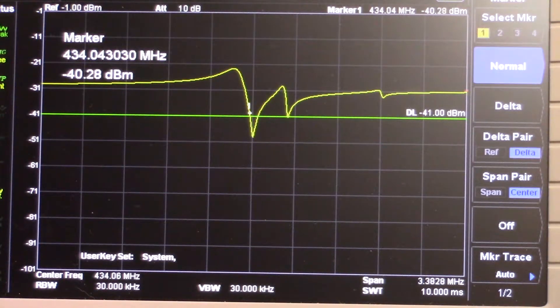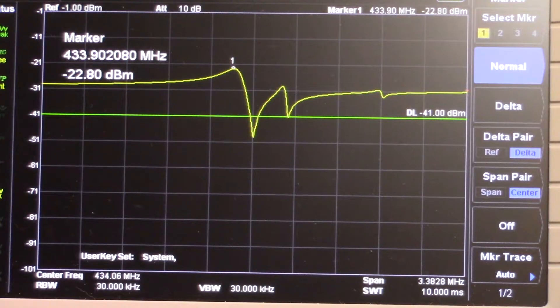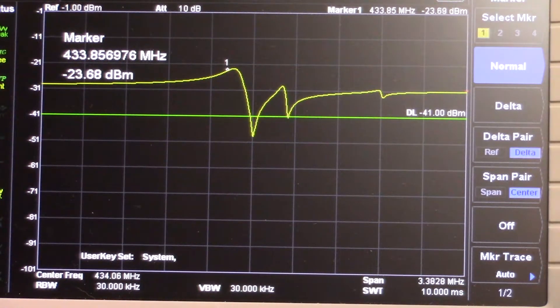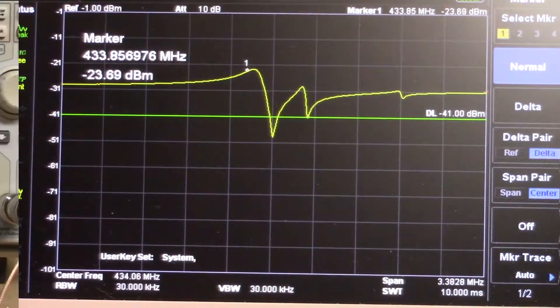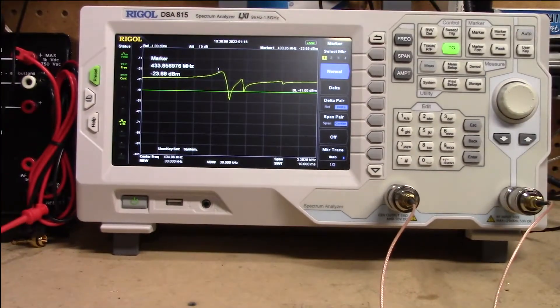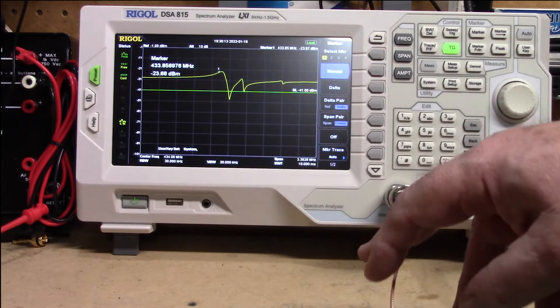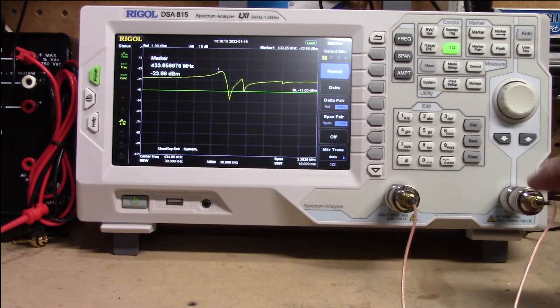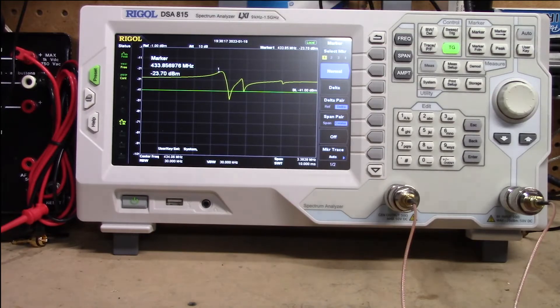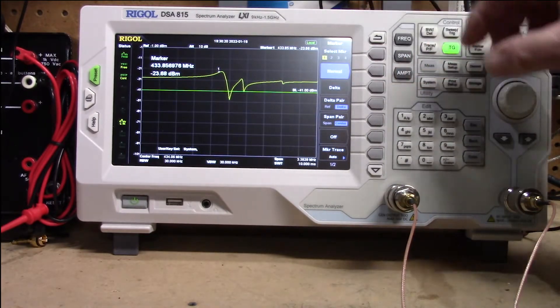So I don't know that I would call that the world's best band pass filter, but for testing purposes we at least know what it's supposed to look like. We're coming out from the tracking generator, this is what's generating our signal, and we're going into the input of the spectrum analyzer.